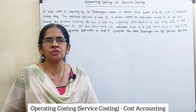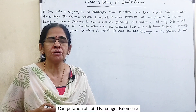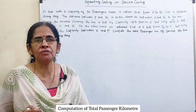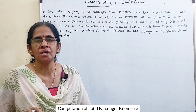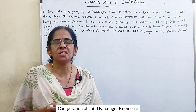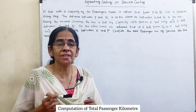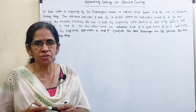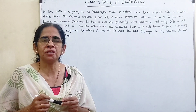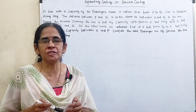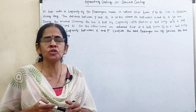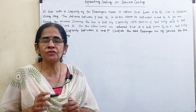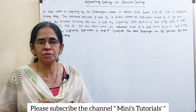Operating costing or service costing is a method of costing which is applied in those concerns which render services rather than producing goods. The main aim is rendering services in service organizations, and the cost of rendering services is determined.